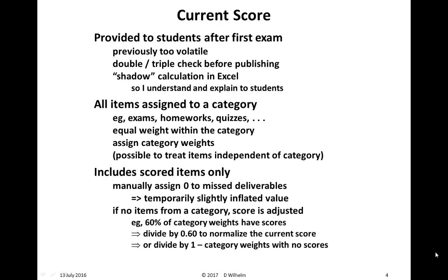The current score includes scored items only. If a student does not submit a deliverable, I have to go in and manually assign a zero to those missed deliverables, so there may be a temporary slightly inflated value, but not very much and not very long. If no items from a category have been submitted and scored, Blackboard adjusts the score. For instance, if 60% of the category weights have scores, Blackboard will divide that value by 0.60 to normalize the score to account for the missing categories. Another way to think of this is that Blackboard divides by one minus the category weights that do not have scores — either way, it's a normalization process that makes sense.